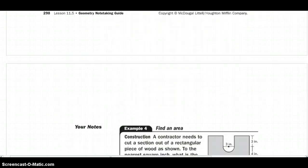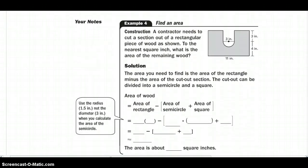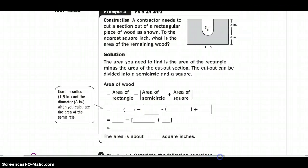Alright, continuing with this. My last thing, I need to find the area. I have a contractor that needs to cut a section of a rectangular piece of wood as shown. To the nearest square inch, what is the area of wood remaining? So what area, after he cuts this piece of wood out, am I going to get back? So the area you need to find is the area of the rectangle. So the whole rectangle minus this little piece on the inside. So if I created that piece, I would get a rectangle. The cut out can be divided into a semi-circle, which is at the bottom here, and then a square, since I know that my base is a square and my height is a square.